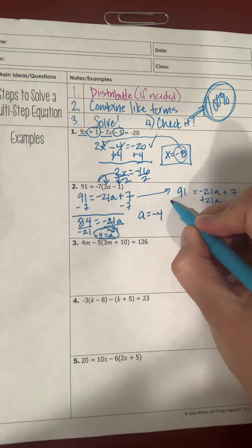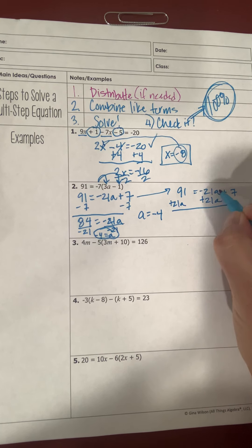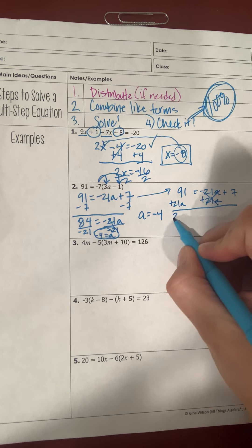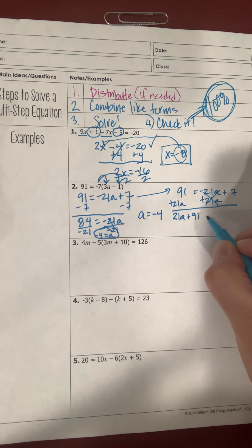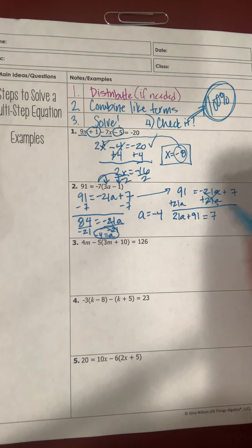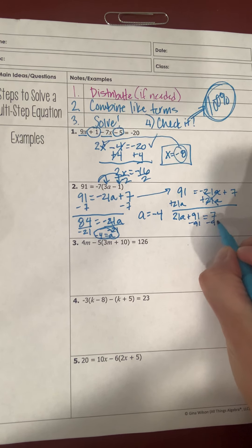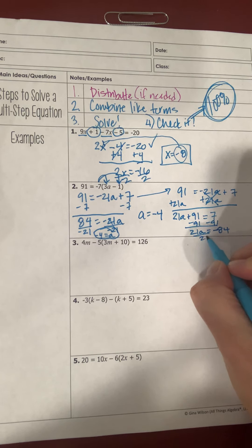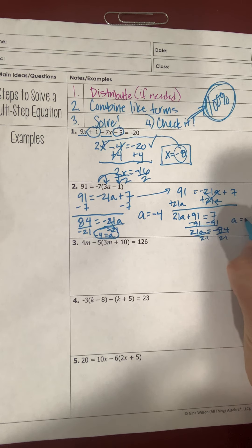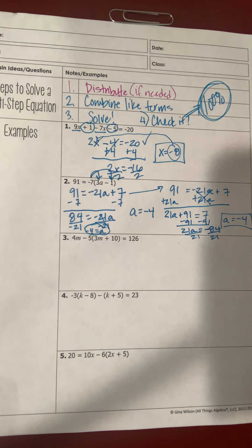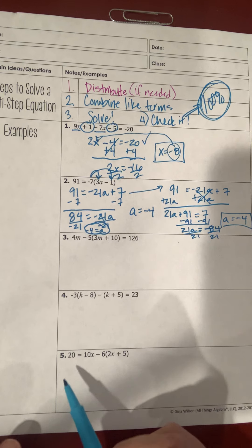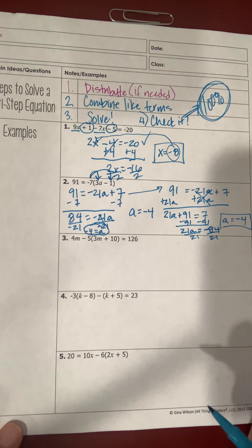Alternatively, I can bring my variable to the left-hand side by adding 21a to both sides — those cancel — giving 21a plus 91, which are unlike terms, set equal to 7. Subtracting 91 on both sides gives 21a equals negative 84, and dividing by 21 gives a equals negative 4 — the same answer either way.